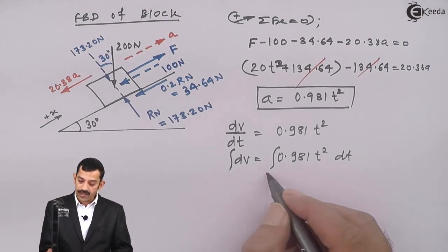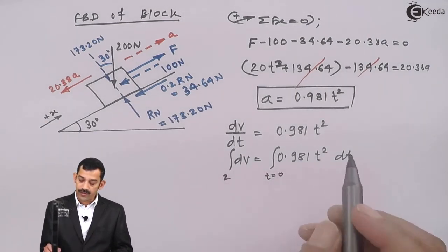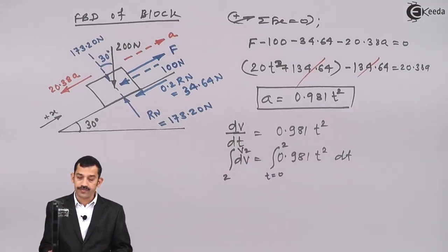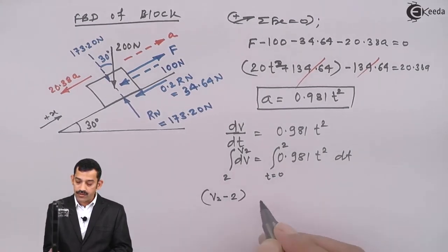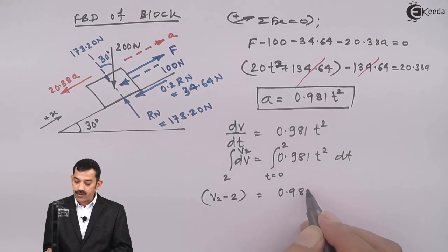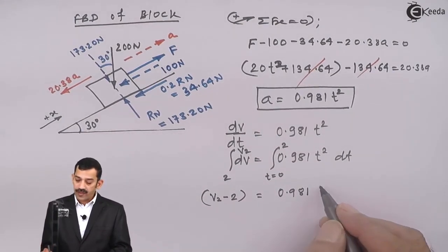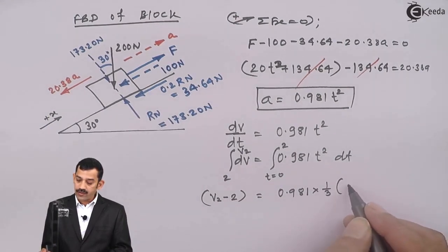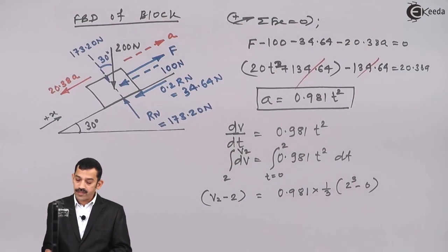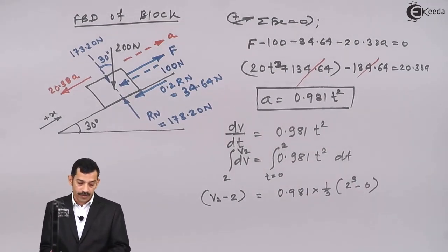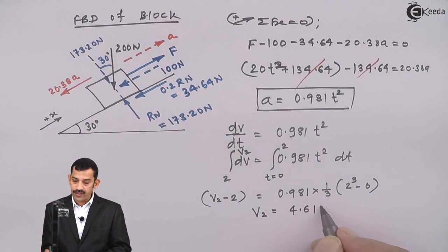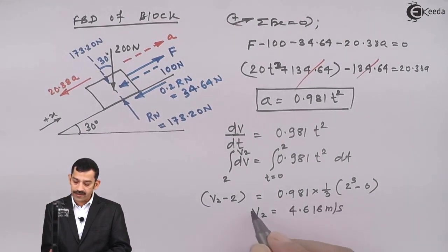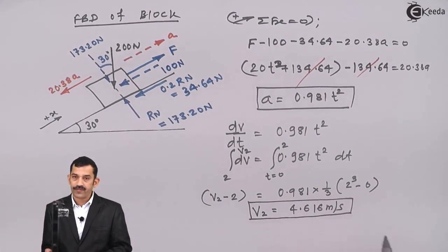The initial condition is: at t = 0, velocity = 2 meters per second. At t = 2 seconds, velocity = v₂. Integrating: v₂ − 2 = 0.981 × (t³/3) evaluated from 0 to 2, which equals 0.981 × (8/3) − 0 = 0.981 × (1/3) × 8. Therefore, v₂ comes out to be 4.616 meters per second. This is the velocity of the block after 2 seconds. Thank you.